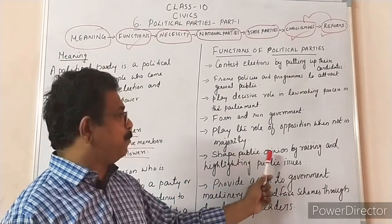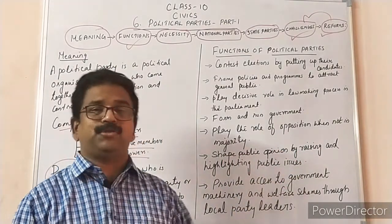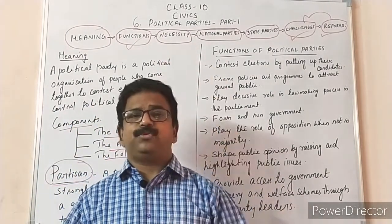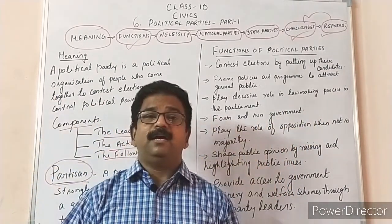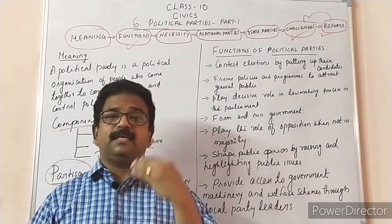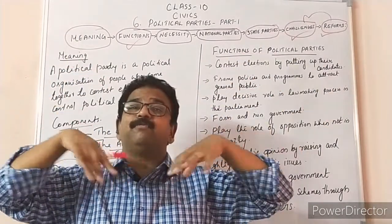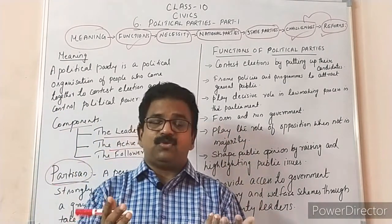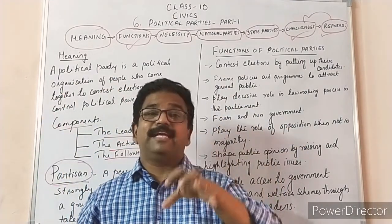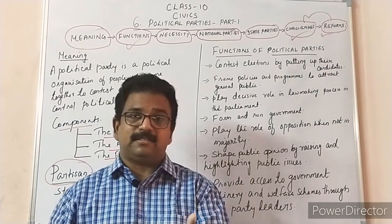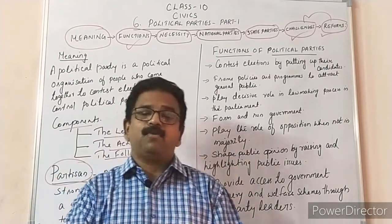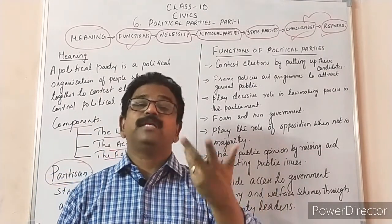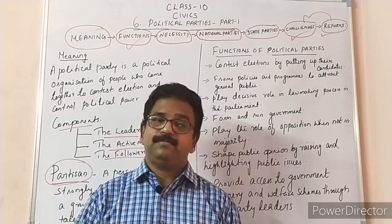The sixth function is that political parties shape public opinion by raising and highlighting public issues. Parties have lots of members and activists spread all over the country — with the help of these supporters, they can raise issues and shape public opinion. The public has their own wishes and aspirations, and parties can raise problems according to those aspirations, including issues against the ruling government, and give shape to public opinion.